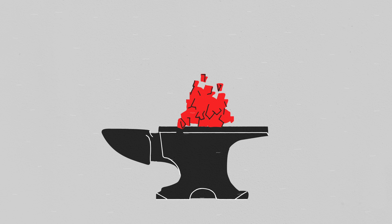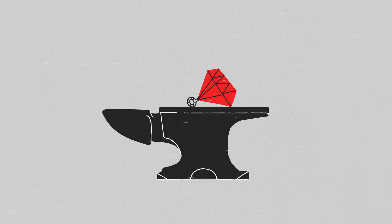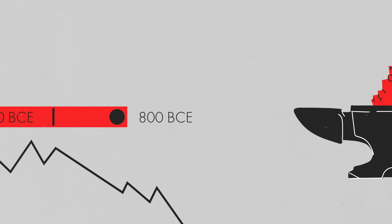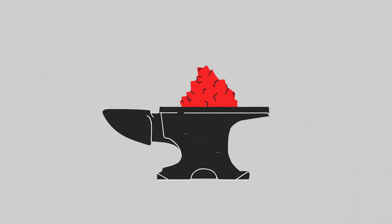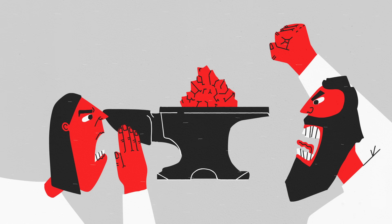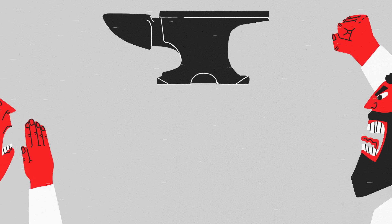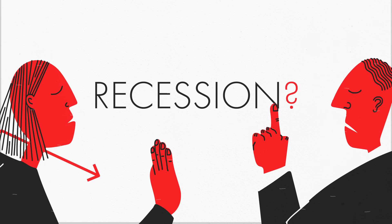For millennia, the people of Britain had been using bronze to make tools and jewelry, and as a currency for trade. But around 800 BCE, that began to change. The value of bronze declined, causing social upheaval and an economic crisis — what we would call a recession today. What causes recessions?